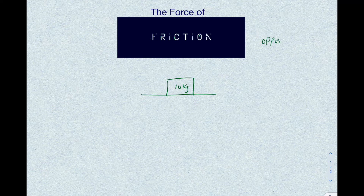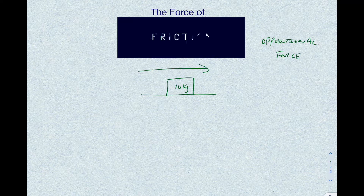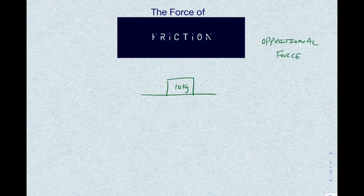The force of friction is an oppositional force — it always opposes the direction of motion, always going in the opposite direction. So if an object is moving to the right, friction acts to the left. If a block is moving in a particular direction, the force of friction will always be in the opposite direction.